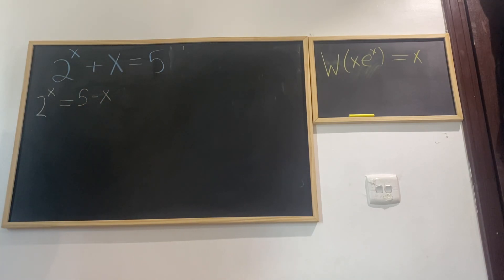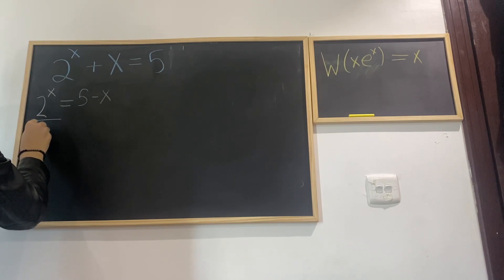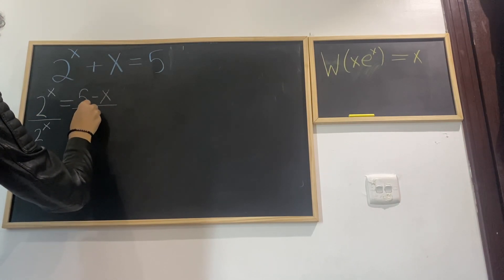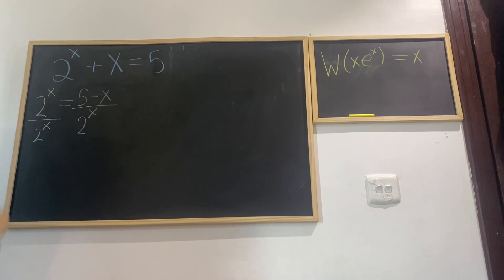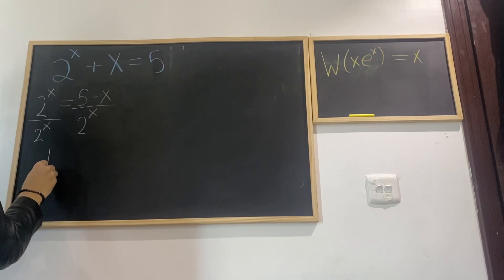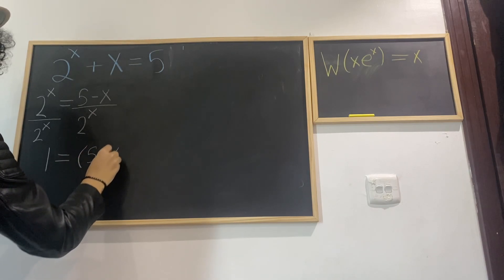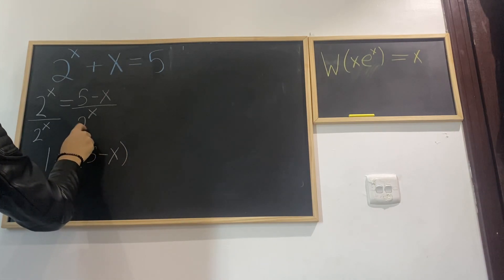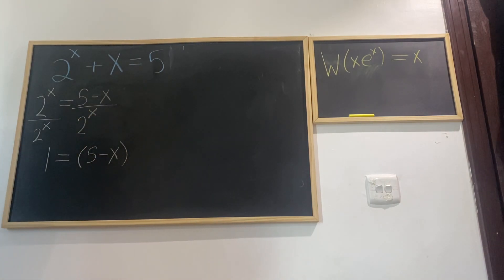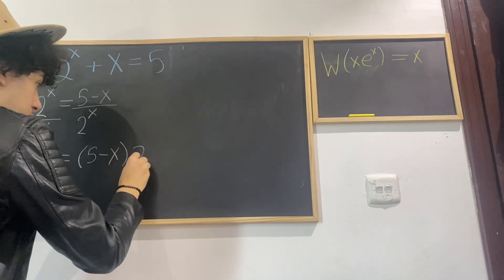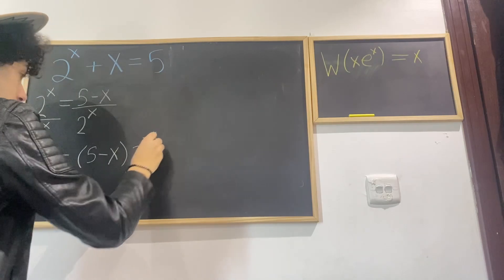Now, what if we divide both sides by 2 to the power of x? So 2^x divided by 2^x simplifies to 1 on the left side, and that equals (5 minus x) multiplied by 2 to the power of negative x, because 2^x in the denominator becomes 2^(−x).